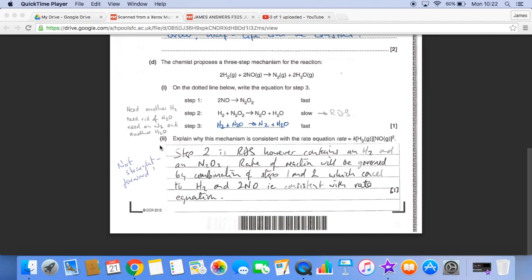And then the last part of the question is not very straightforward. You can see I've written up here, and that's because ordinarily you just look at step two because that's the RDS or the rate determining step, and you would go it should have a hydrogen and an N2O2 in the rate equation. But it doesn't, it has hydrogen and NO squared, so we've got to look at it in a bit more detail now.